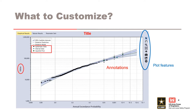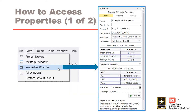Now that we know what to change, the next topic is how to make the edits. We will do so using the properties window and the plot features located to the right of the Best Fit graph. The properties window is docked to the right side of your screen by default. If it is not, the properties window can easily be accessed via the View menu, then Properties Window.